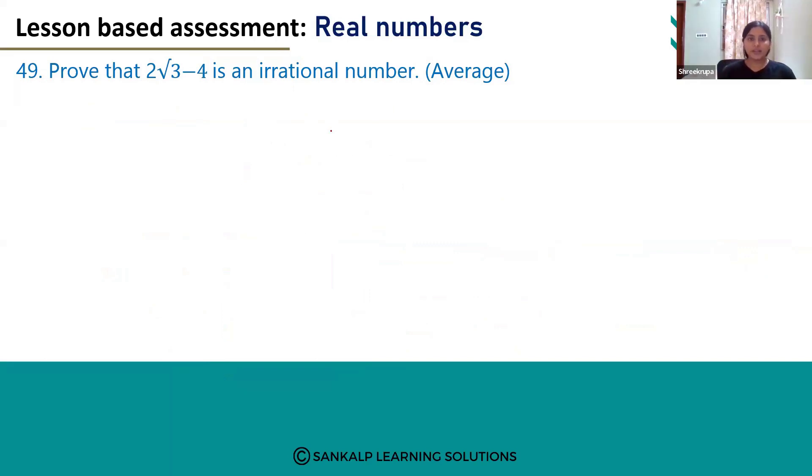Hello everyone. Let's see question number 49. Prove that 2√3 - 4 is an irrational number.